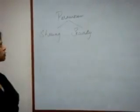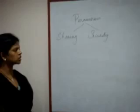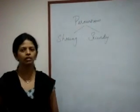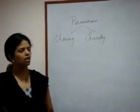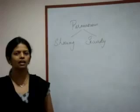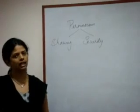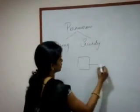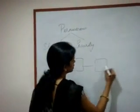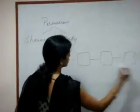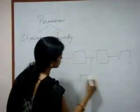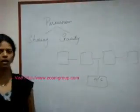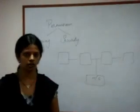In permissions we have two types: sharing level permissions and security level permissions. Let us first discuss what exactly sharing level permissions are. Taking an example of a network — sharing means you are making a resource available for everyone in the network; you want everyone to access that particular resource.